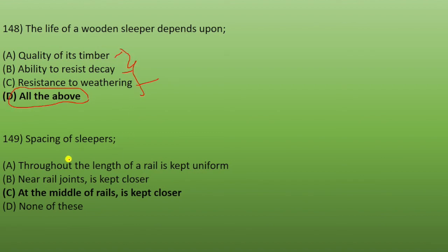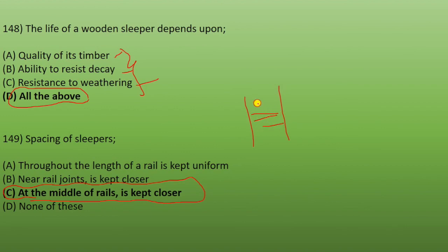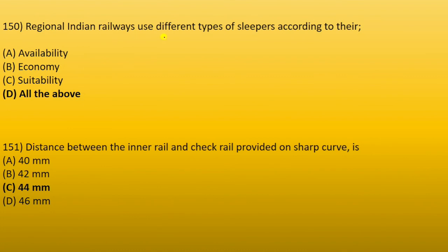Next: how is the spacing of sleepers arranged? Near rail joints, sleepers are kept closer; at the middle of the rail, spacing is uniform. The spacing is closer near rail joints. Next: regional Indian railways use different types of sleepers according to their availability, economy, and suitability — all of the above.